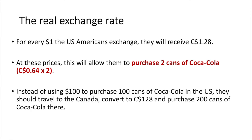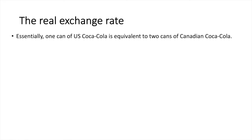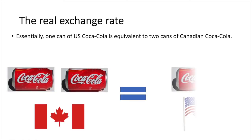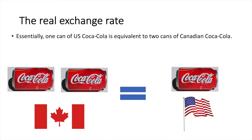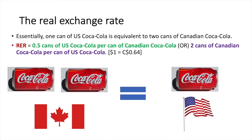Instead of using $100 USD to purchase 100 cans of Coca-Cola in the US, they should travel to Canada, convert to 128 CAD, and purchase 200 cans of Coca-Cola there. Essentially, 1 can of US Coca-Cola is equivalent to 2 cans of Canadian Coca-Cola. The real exchange rate equals 0.5 cans of US Coca-Cola per can of Canadian Coca-Cola, or 2 cans of Canadian Coca-Cola per can of US Coca-Cola.